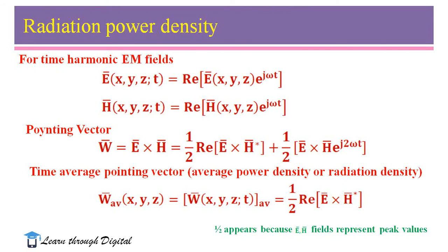For time harmonic EM fields, E vector and H vector are both functions of space and time. The Poynting vector W vector equals E cross H can be written as one-half of the real part of E vector cross the complex conjugate of H vector, plus one-half of E vector cross H vector times e^(j2ωt). In these two terms, the first term is the real part and the second term is the imaginary part — it represents the reactive power.